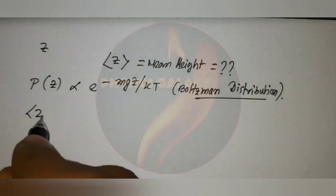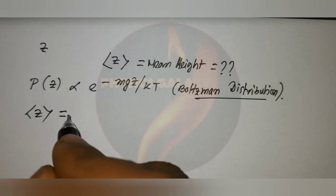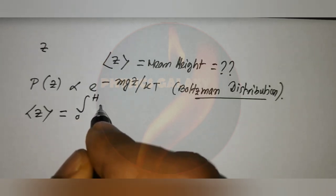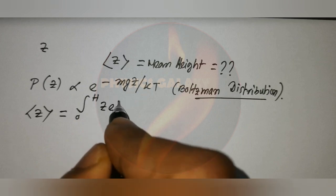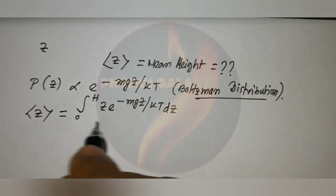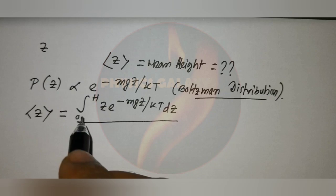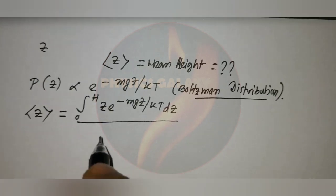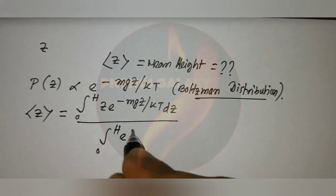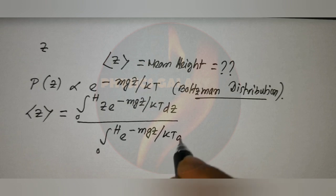Now we calculate the mean height. The expectation value of Z equals the integral from 0 to H of Z times e to the power minus MgZ by kT, dZ — since the maximum height is H — divided by the integral from 0 to H of e to the power minus MgZ by kT, dZ.